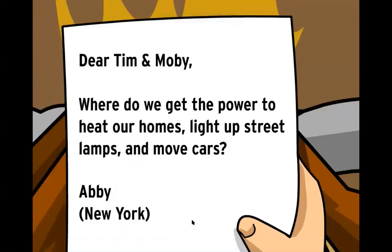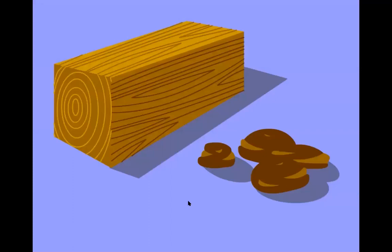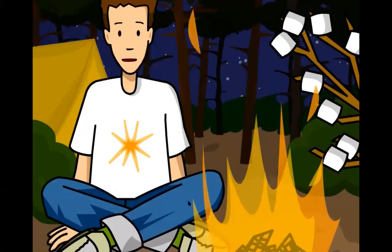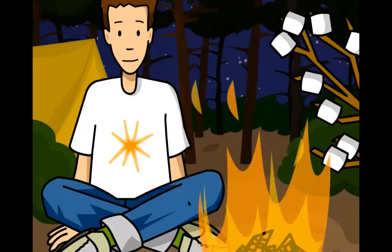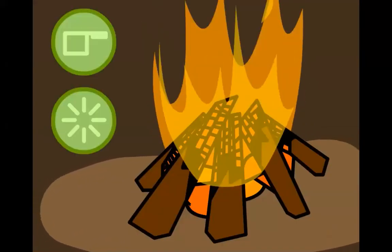Here, Tim and Moby, where do we get the power to heat our homes, light up street lamps, and move cars? From Abby. Humans use energy for everything. As a result, we've come up with a lot of ways to generate it. Probably the most basic method of energy production is from burning biomass like wood and animal droppings. This campfire my dad built is a good example of biomass energy. Biomass energy is used all over the world for cooking, lighting, and heating.